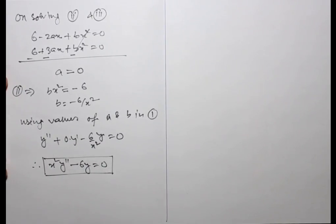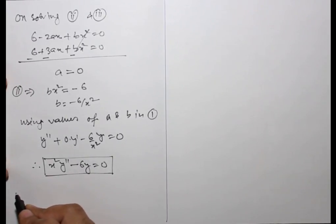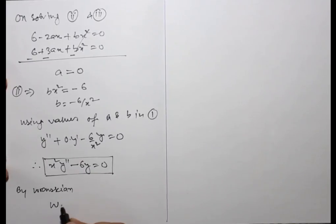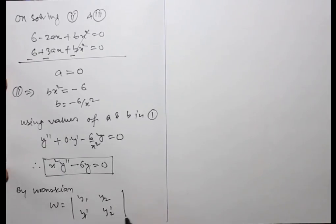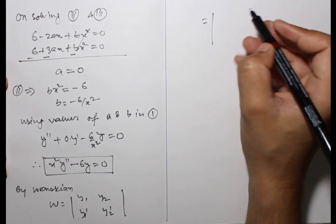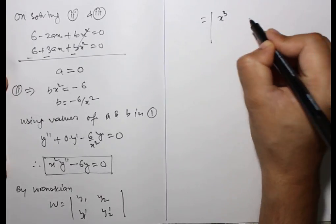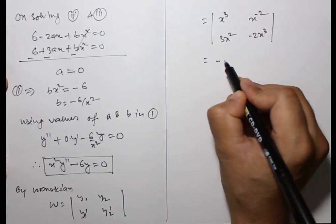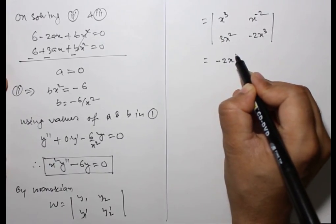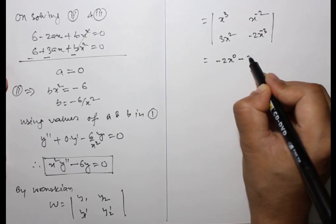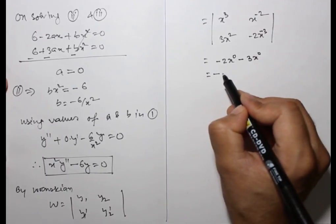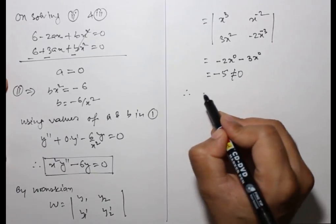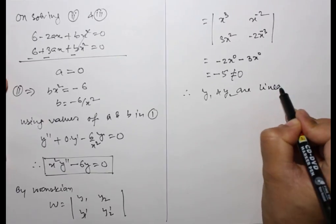Now the second part says these y1 and y2 are linearly independent, verified by the Wronskian. W = |y1, y2; y1', y2'| with y1 = x³, y2 = x^(-2), y1' = 3x², y2' = -2x^(-3). This equals -2x^(0) - 3x^(0) = -5, which is not equal to zero. Therefore y1 and y2 are linearly independent.